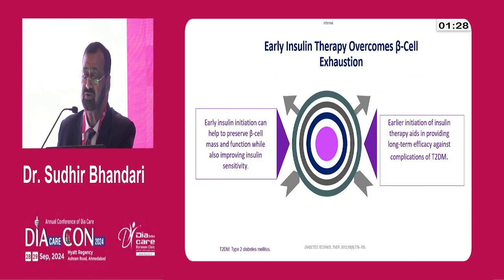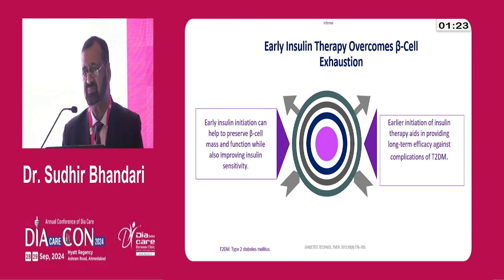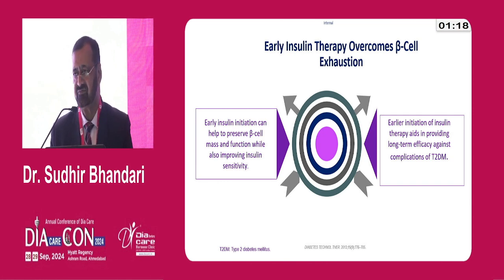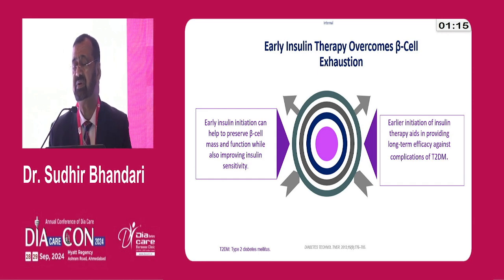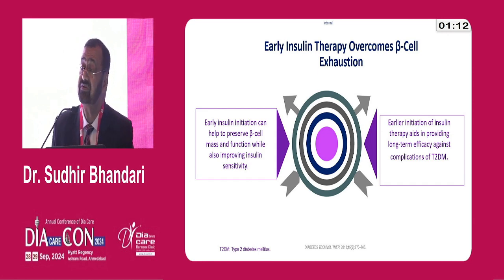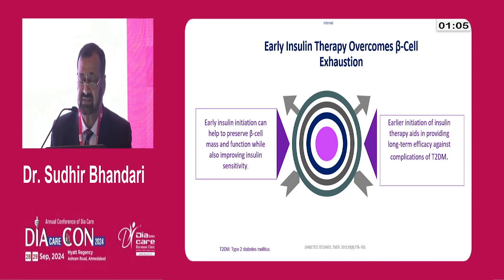Early insulin therapy overcomes beta cell exhaustion and apoptosis. Imagine 50% beta cell loss on day 1, with 4–5% lost every year thereafter. Start insulin early — you preserve the remaining beta cells and could delay the patient from requiring basal-bolus therapy or large insulin supplementation, by preventing beta cell apoptosis. This is very important.